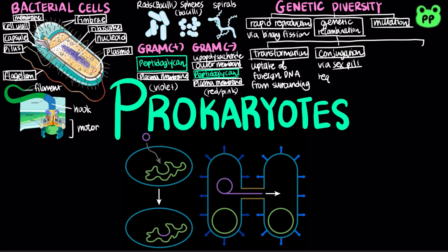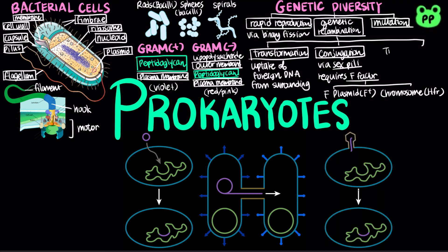A piece of DNA called the F-factor is required for the production of sex pili. The F-factor can exist as a separate plasmid or as DNA within the bacterial chromosome, known as high-frequency recombination. Lastly, transduction transfers genes between bacteria by bacteriophages, which are viruses that infect bacteria.